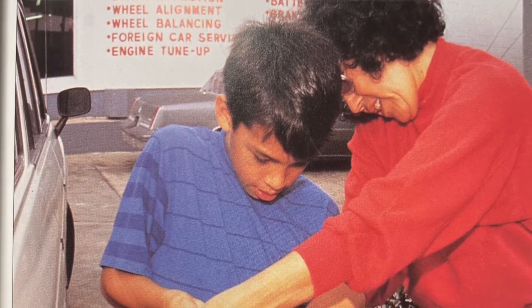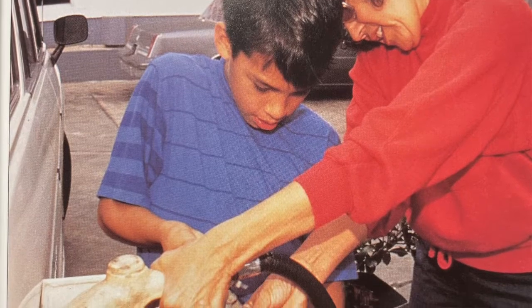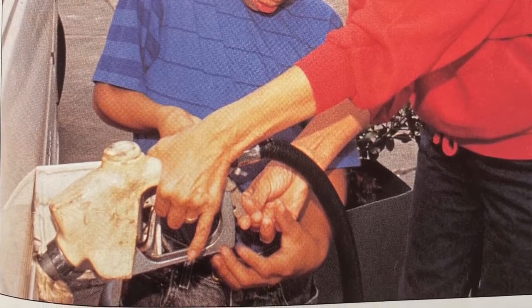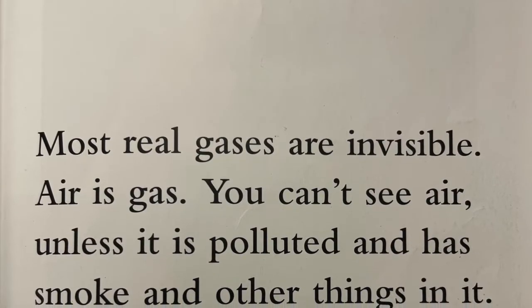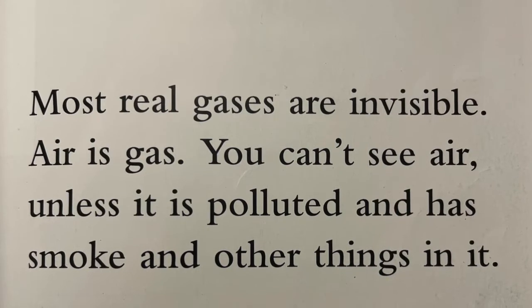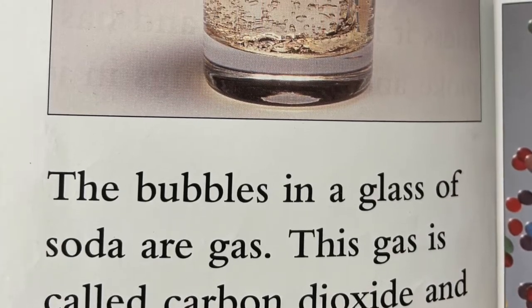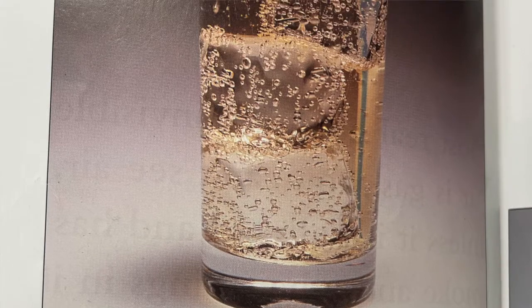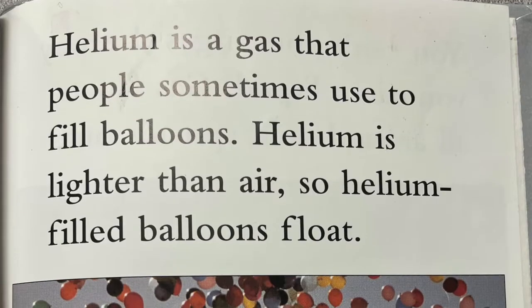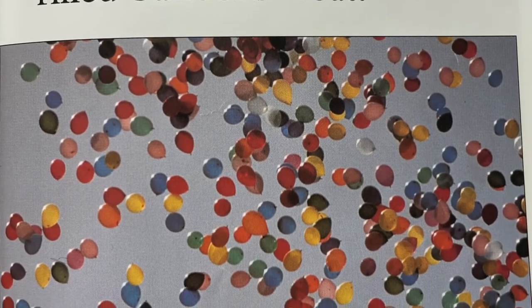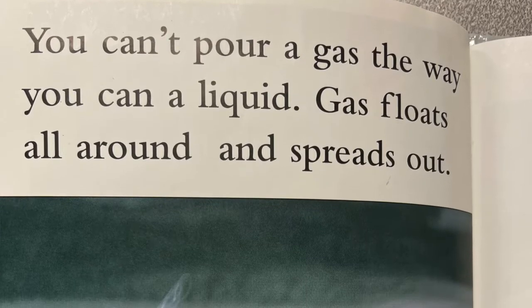Can you name a gas? You might think of the gas at the gas station first. The gas people put in cars is actually gasoline — gasoline is a liquid. Most real gases are invisible. Air is gas. You can't see air unless it is polluted and has smoke and other things in it. The bubbles in a glass of soda are gas — this gas is called carbon dioxide. Helium is a gas that people sometimes use to fill balloons. Helium is lighter than air, so helium-filled balloons float. You can't pour gas the way you can a liquid — gas floats all around and spreads out.